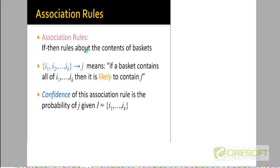Here is a more formal definition of an association rule. An association rule has the general form: it has a set of items on the left hand side — a list of k items i1 to ik where k is greater than or equal to 1 — and on the right hand side we have a single item called j. What this rule means is that if a basket contains all the items i1 to ik, then it is likely to contain item j as well. That is, a customer purchasing all k of these items is likely to also purchase item j.